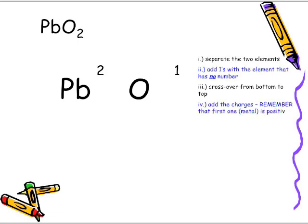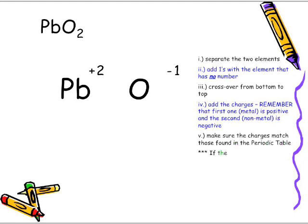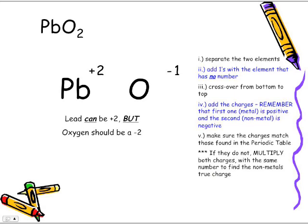We're going to add the charges. Remember that the first one is positive and the second one is negative. Now we need to make sure that the charges match. Lead — Pb — it can be plus two, but it also can be plus four. The thing is, oxygen is not negative one; oxygen should be negative two according to the periodic table.